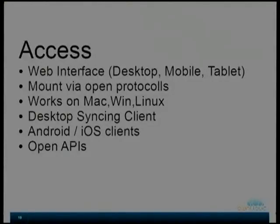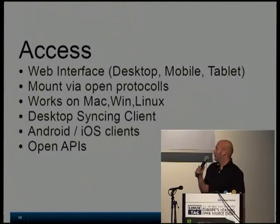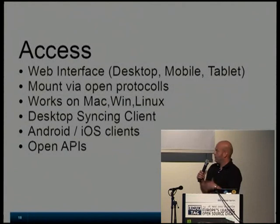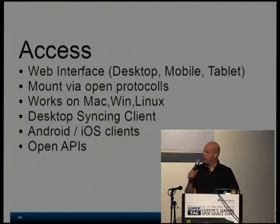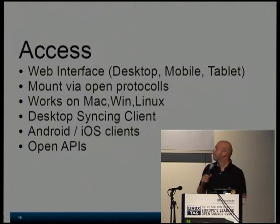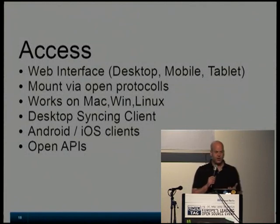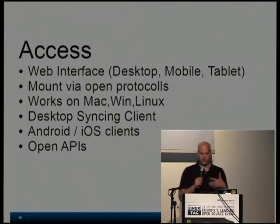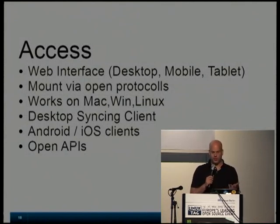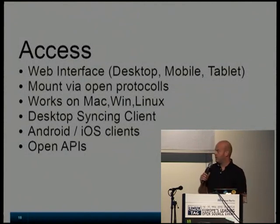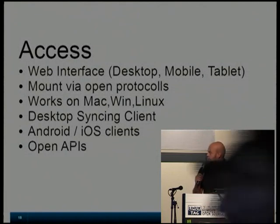The core of OwnCloud is enabling access to your data. We have a nice web interface where you can configure everything, create folders, put your stuff in folders, and drag and drop from your desktop to your browser. We support protocols like WebDAV where you can mount it directly as a network drive on your desktop — Windows or Linux — without an additional client. But we also have a special desktop syncing client that you can put in your system tray and it syncs all your stuff locally to your hard disk. If someone knows Dropbox or Google Drive, it's exactly the same functionality.